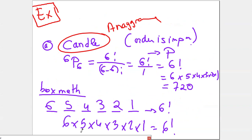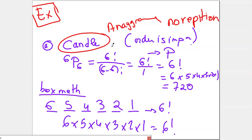Let's do some examples. If I have the word CANDLE, how many arrangements — how many words using the letters of CANDLE can I form, with no repetition? This is a permutation because I'm using all the letters: permuting 6 out of 6, which is P(6,6). That equals factorial 6 over factorial 0, and since factorial 0 is 1, the answer is factorial 6.